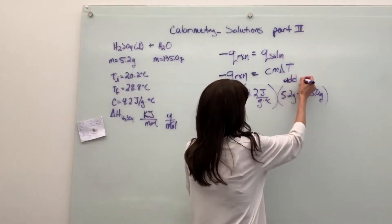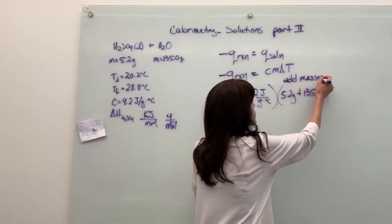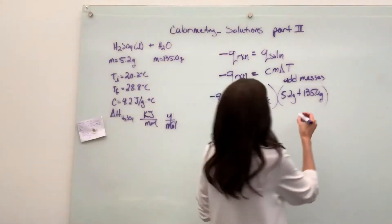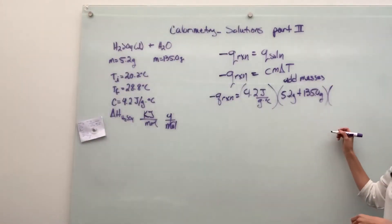Very, very few students got that problem 100% correct. So be careful. If you're making one new solution, you have to add the masses. I'm going to write it again, add masses. And this is only when you're making one new homogeneous solution. Now we're going to multiply this by change in temperature.